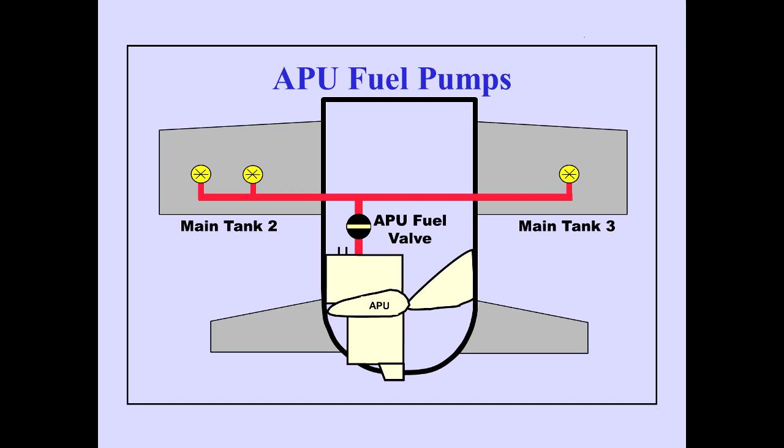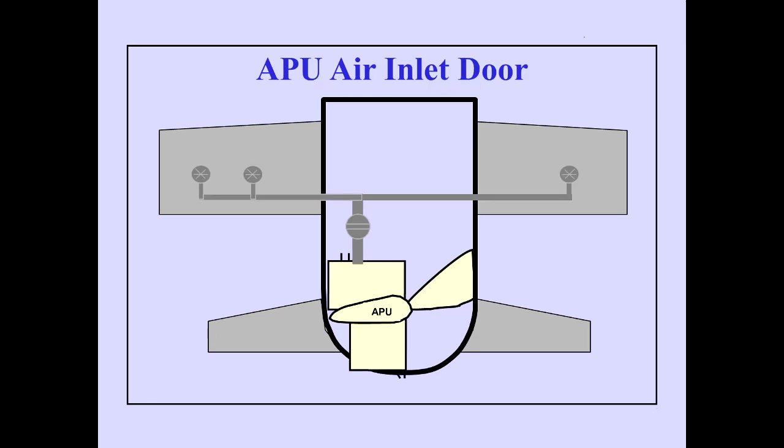Either an AC or DC fuel pump in main tank number 2 supplies fuel to the APU. An APU fuel valve controls the flow of fuel from the tank to the APU. Air for the APU enters through a movable inlet door on the right side of the fuselage above the horizontal stabilizer. The APU exhaust is through the tail cone.